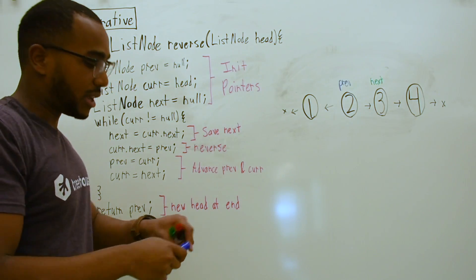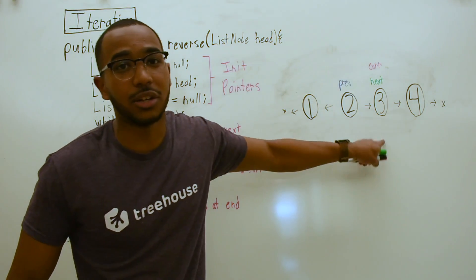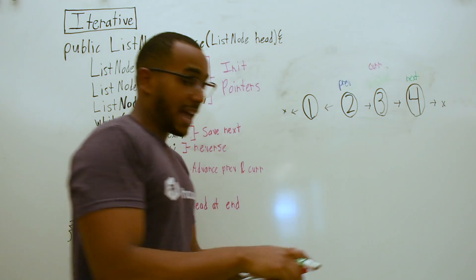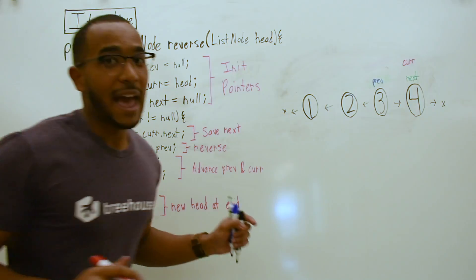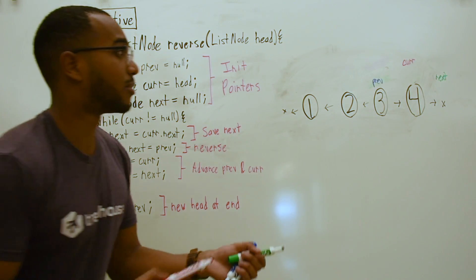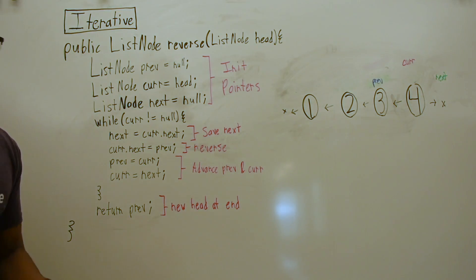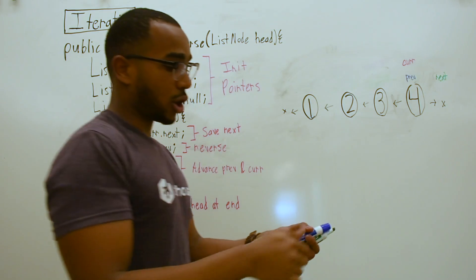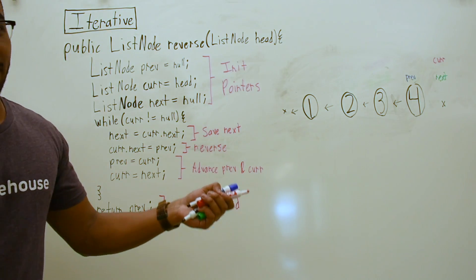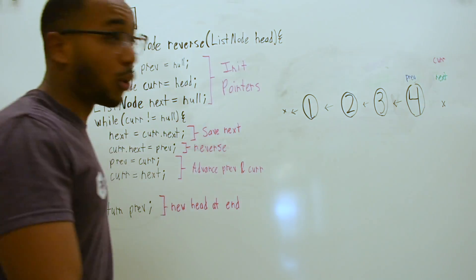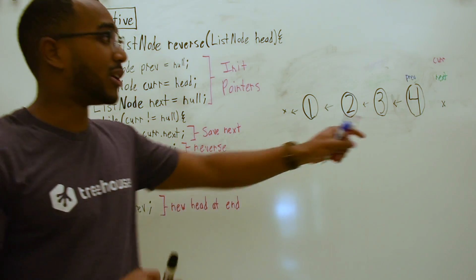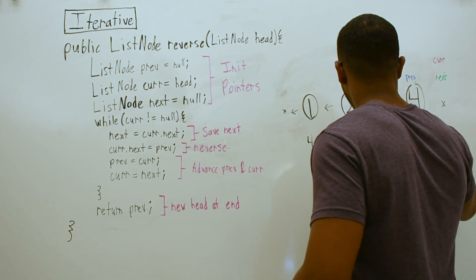Now we advance prev and curr, and you start to see the pattern. We advance prev and curr and we're back at the top of the loop — curr is still not null, we're not finished. We advance next at the top of the loop, perform the reversal, and advance curr and prev. Is curr null? Not yet, so keep going. Advance next — curr's next is null, which is fine. Point curr to prev. Now we advance curr and prev. Pre points where curr was, and curr points to the stashed next, which is null. Now we have our fully reversed list. Curr is null so the while loop is finished. What do you notice? Prev is sitting at the new head — that's why we return prev. It's nothing special; prev ends up sitting at the new head. So our new list is 4 → 3 → 2 → 1.